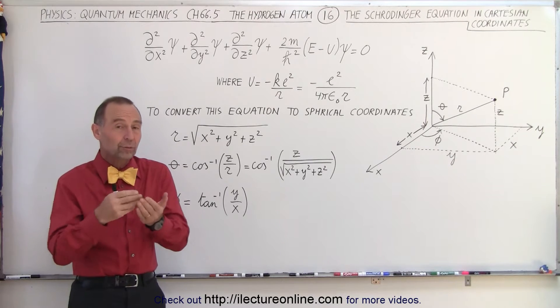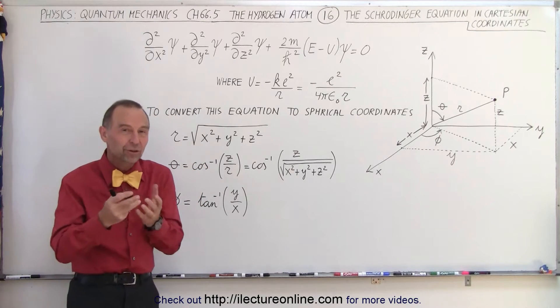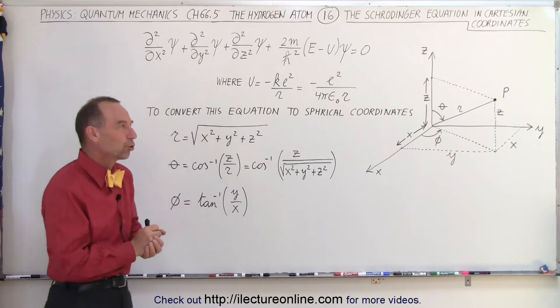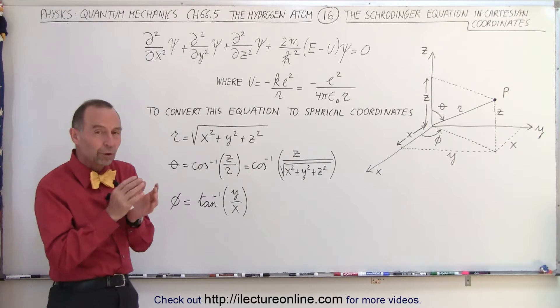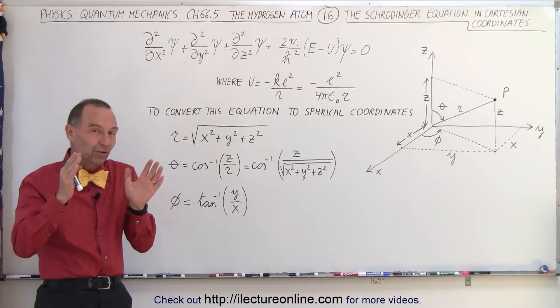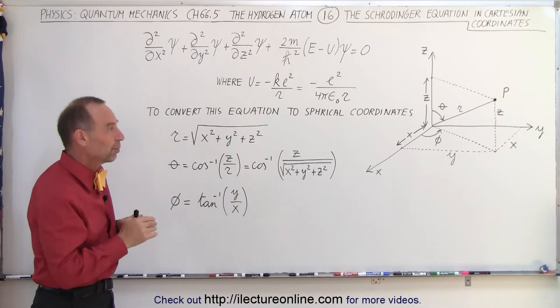The Schrodinger equation is a differential equation for the wave function that describes the electron motion. Now, we're going to go from what we did before, from one-dimensional motion to three-dimensional motion.